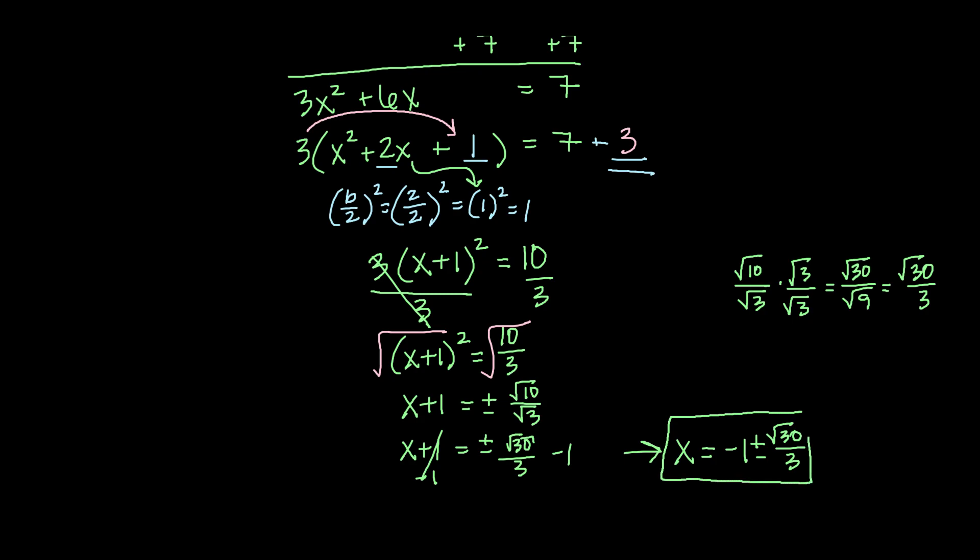So when we're using the method of completing the square, we need to remember if we have a coefficient other than 1 as our lead coefficient of x squared, we first have to factor that out and then finish off the method of completing the square. Alright guys, that does it for this video. We'll catch you in the next one.